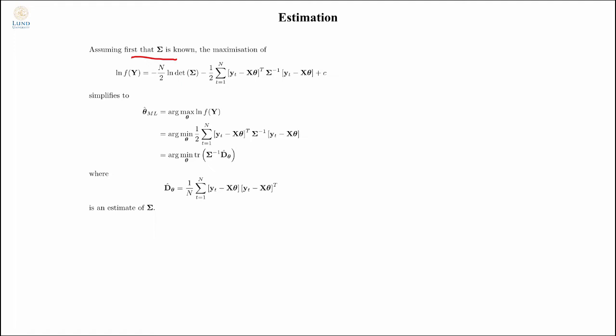But we begin by assuming that the covariance matrix is known, just to initialize our discussion. Then I can express the log likelihood function like this, and if I compute the maximum of that, this part will not depend on the unknown parameter thetas, so if I maximize it, I will get this expression.